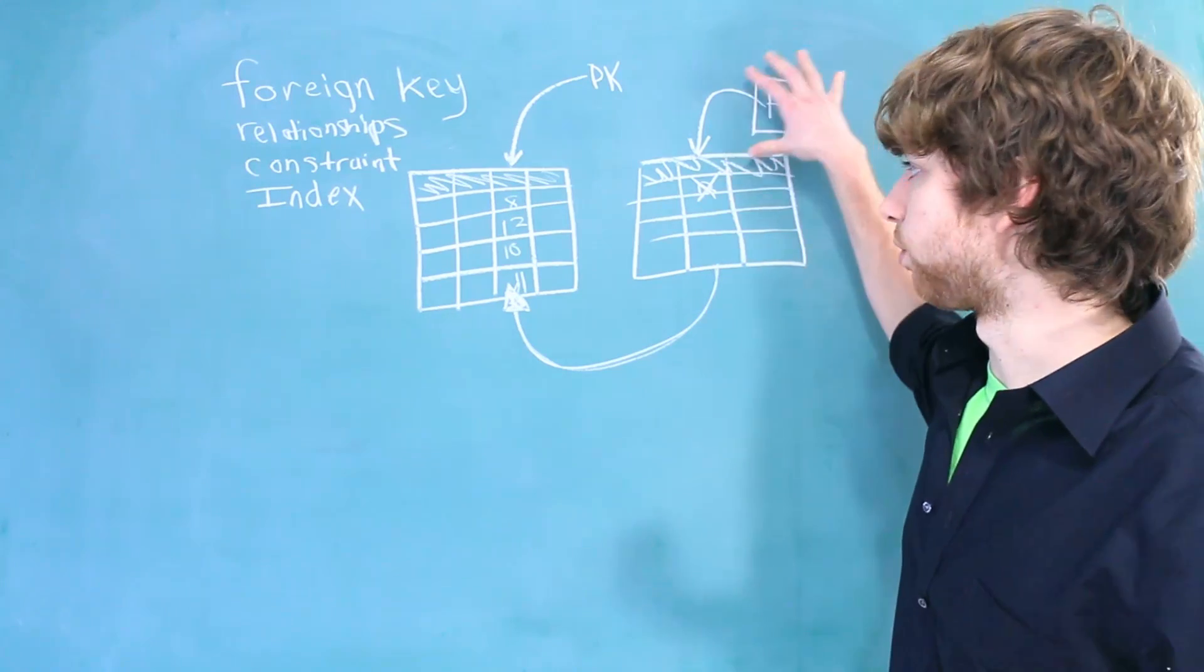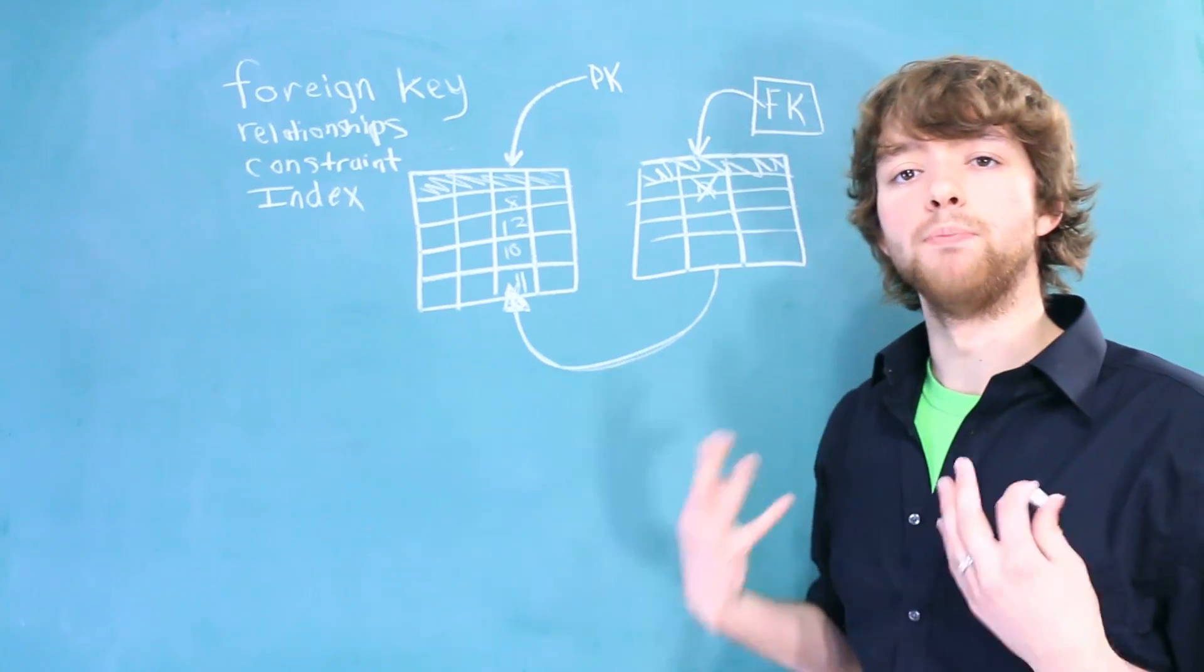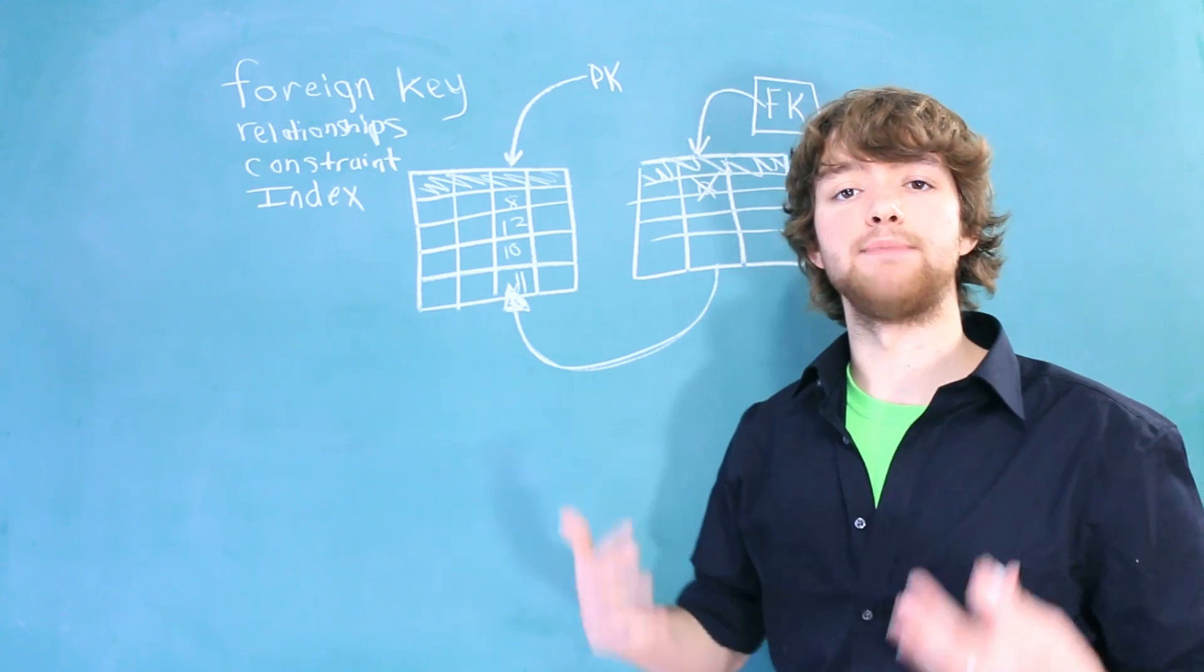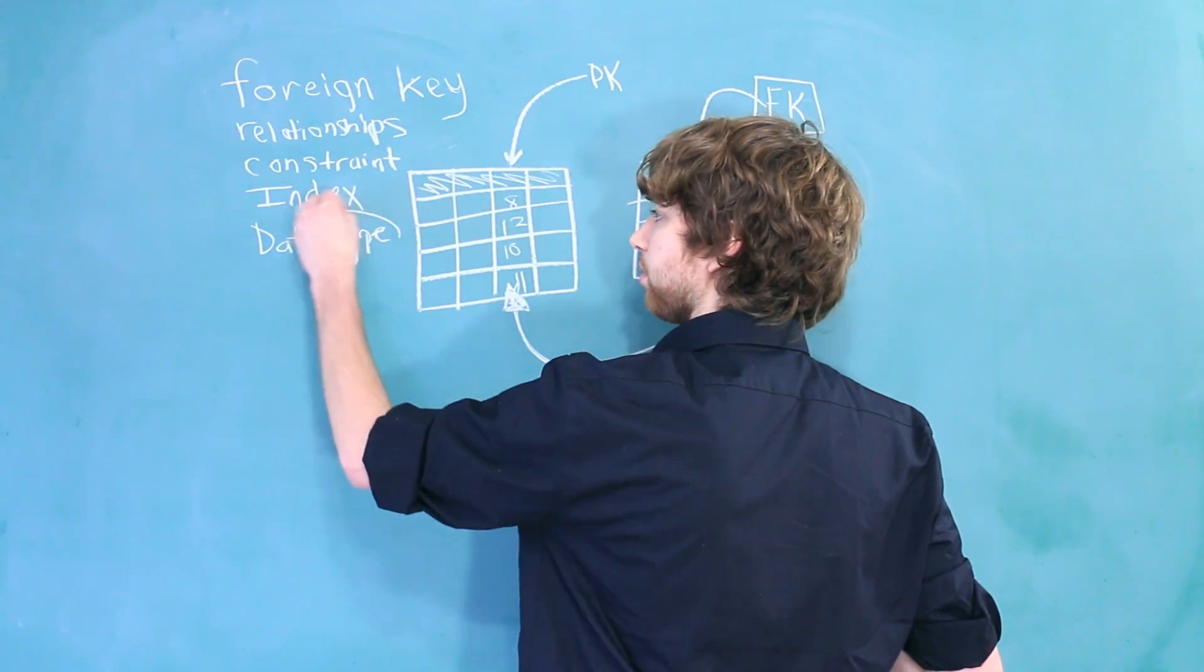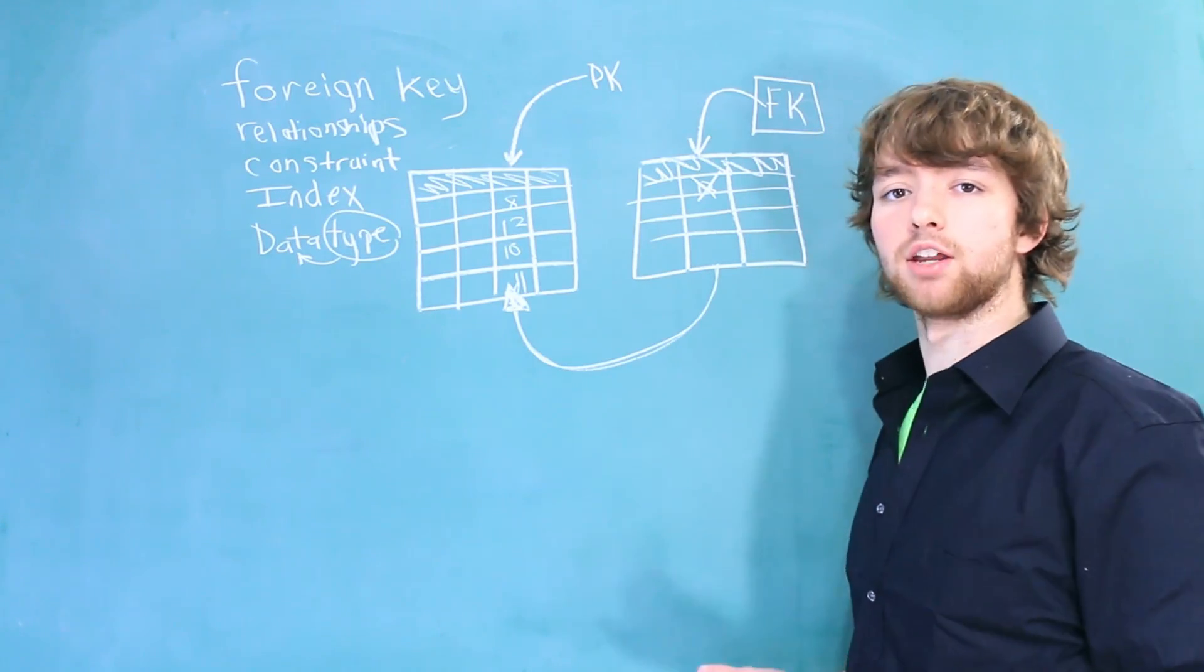Another thing regarding foreign keys is that when you're referencing another column, both of the columns have to have the same data type. Put simply, a data type is just the type of data.